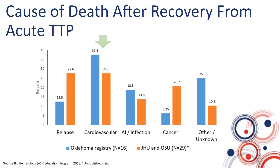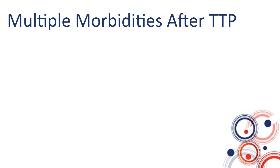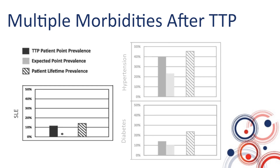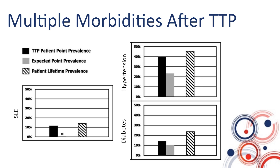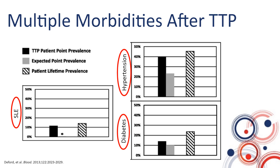Cardiovascular deaths include myocardial infarction, stroke, and congestive heart failure, and this does not account for other deaths where patients also had cardiovascular comorbidities such as coronary artery disease or hypertension. In an analysis from the Oklahoma cohort, the prevalence of comorbidities that are also cardiovascular risk factors — such as lupus, hypertension, and diabetes — are much higher in patients with TTP than expected from an age- and sex-adjusted reference population.